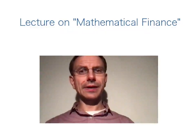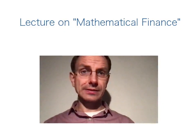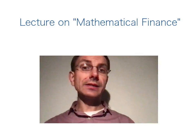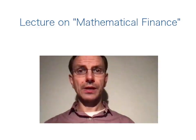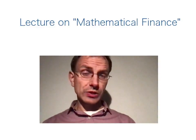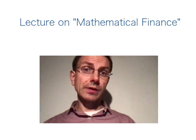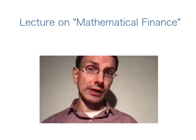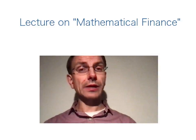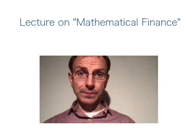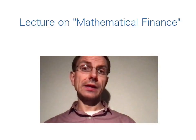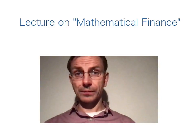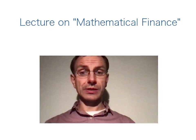Welcome to the lecture on mathematical finance. In the last lecture, we studied in detail the question of existence of an equivalent martingale measure and its relation to the arbitrage-freeness of the underlying financial market model. However, we completely ignored the question whether an equivalent martingale measure, if it exists, is unique. This is what I would like to do in this lecture. Moreover, I would like to discuss the consequences when the equivalent martingale measure is unique.